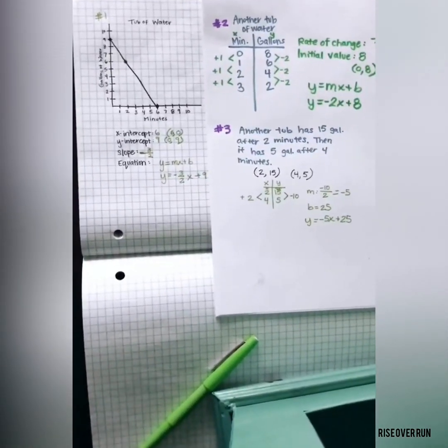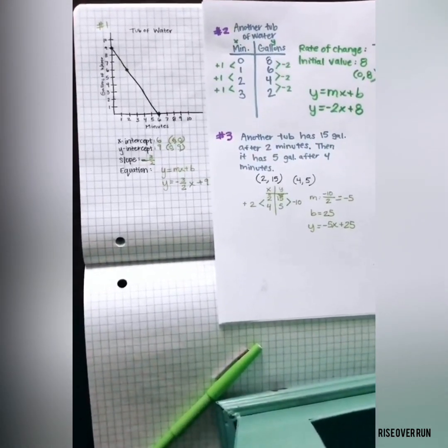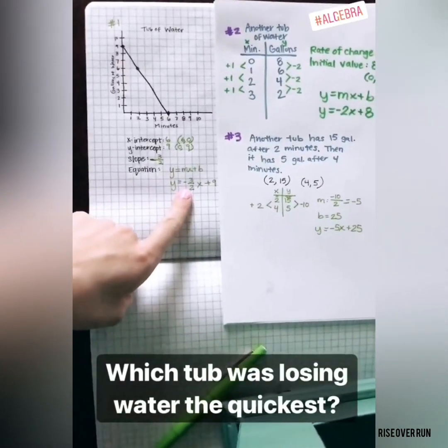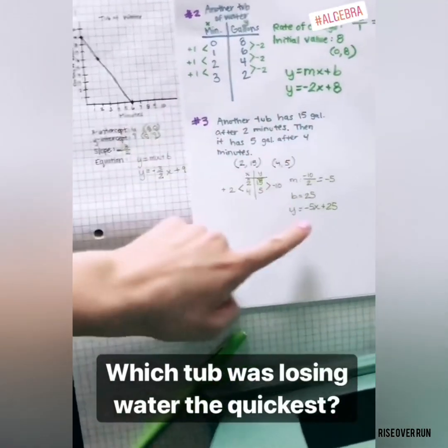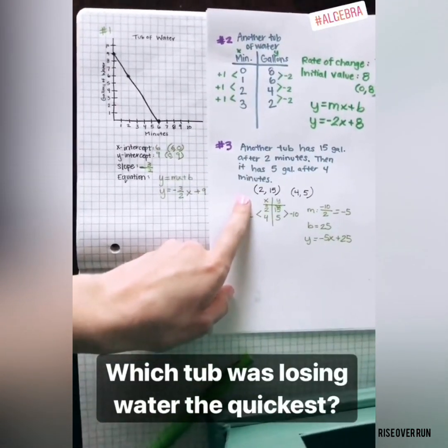If we're asked to compare rates, we're looking at the slope or the m. Which tub of water was losing water the fastest? Here we have negative 3 over 2, here we have negative 2, and here we have negative 5, which means this tub was losing the most water per minute, or it was losing water the quickest.